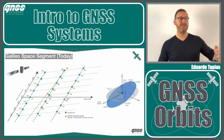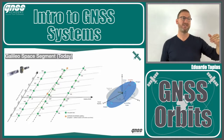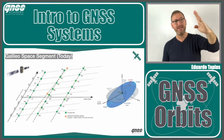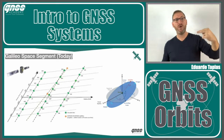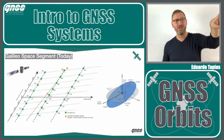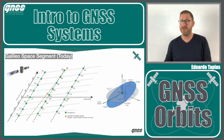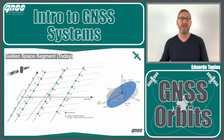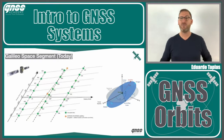Looking at the distribution of Galileo satellites: the green points represent the orbital planes, with eight satellites per plane across three planes. There are also two additional satellites shown in orange — these were placed in an incorrect orbit by the Soyuz launcher and cannot be used in the operational system today. So we have two Galileo satellites that are not in the correct orbit and are currently unusable.